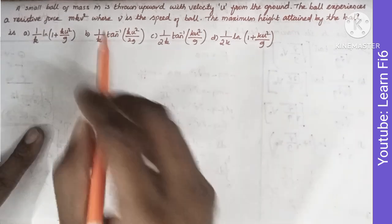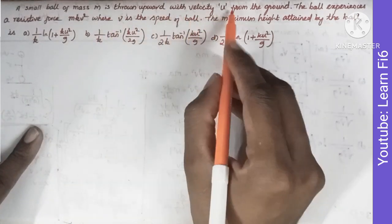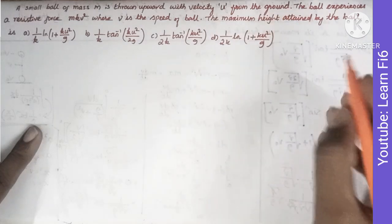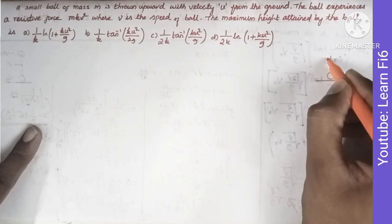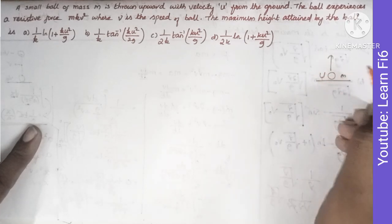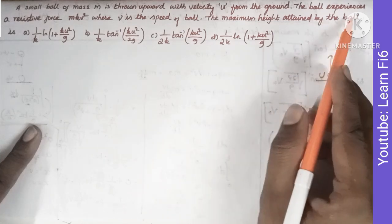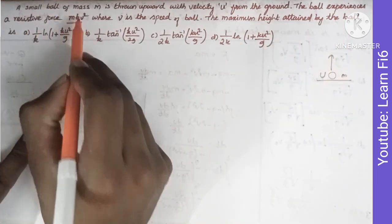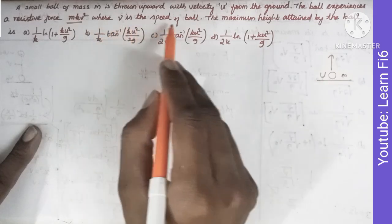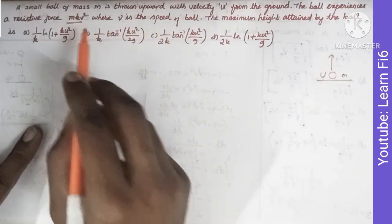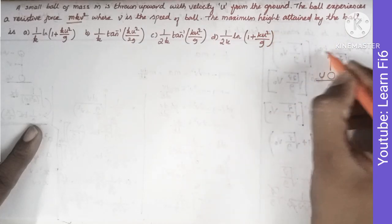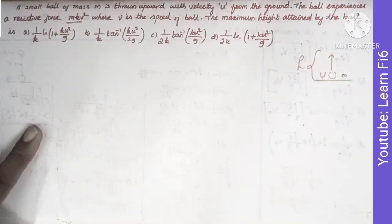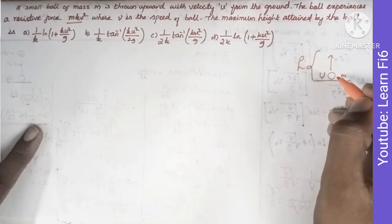A small ball of mass m is thrown vertically upward with initial velocity u from the ground. The ball experiences a resistive force mkv², where v is the speed of the ball and k is a constant. We have to find the maximum height attained by the ball.